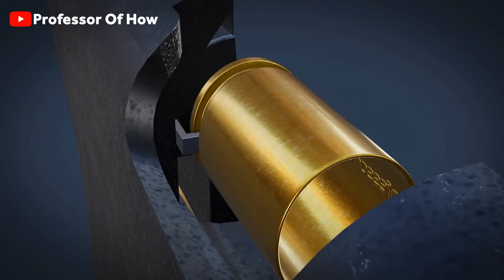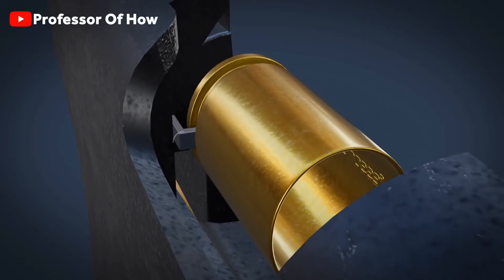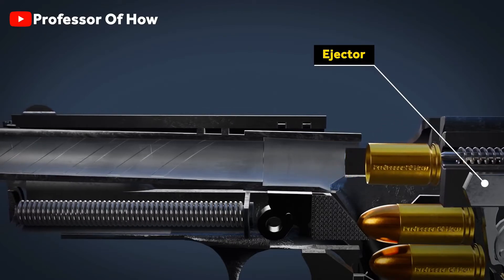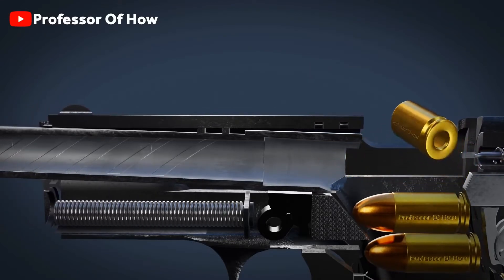The law of momentum conservation is nothing but an essential consequence of Newton's third law of motion. So, with the help of this circled extractor slide, while moving backward, we'll take this case backward after striking with the ejector, which will be moved out of the gun.